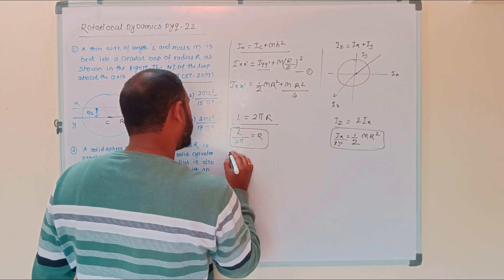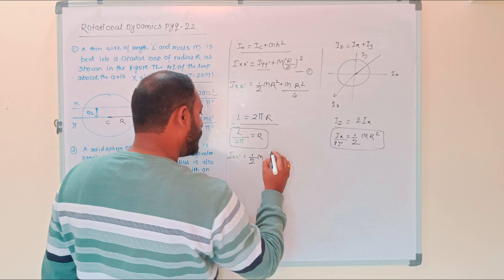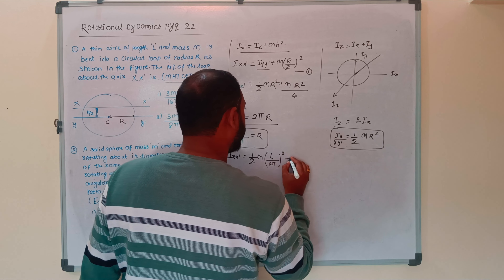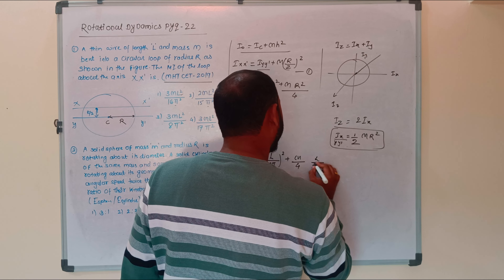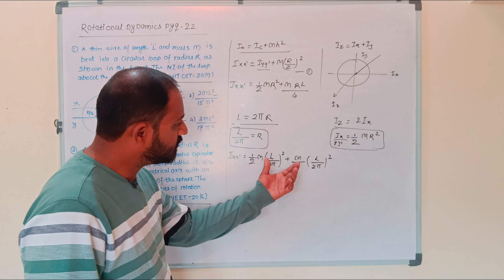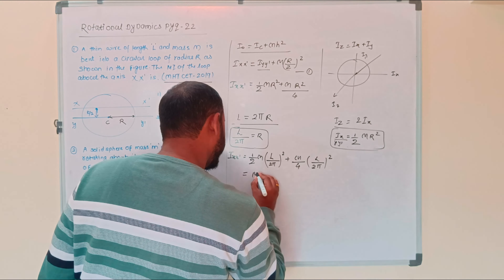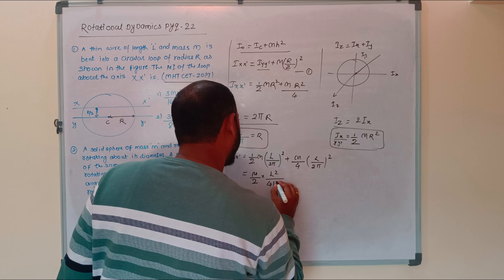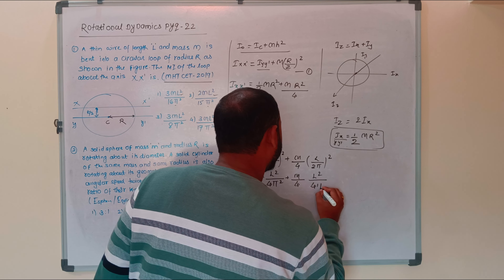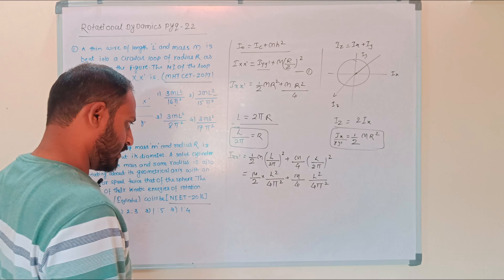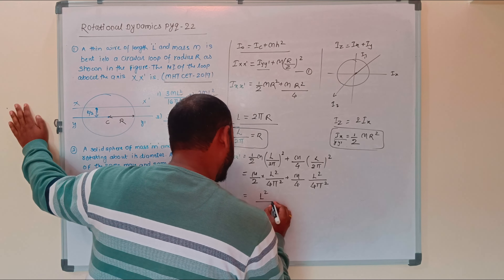Substituting R = L/(2π) into the expression: (1/2) M × (L/2π)² + M/4 × (L/2π)². This gives M/2 × L²/(4π²) + M/4 × L²/(4π²), which simplifies with L²/(4π²) as a common factor.